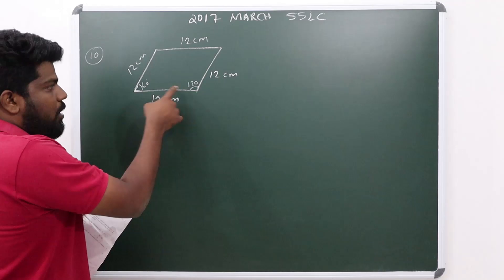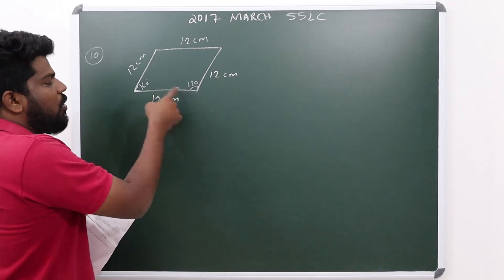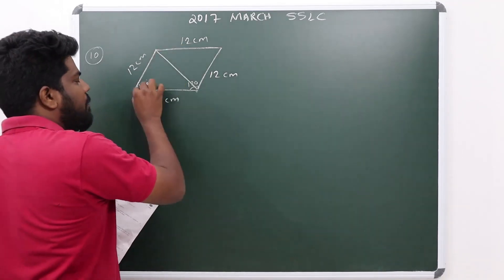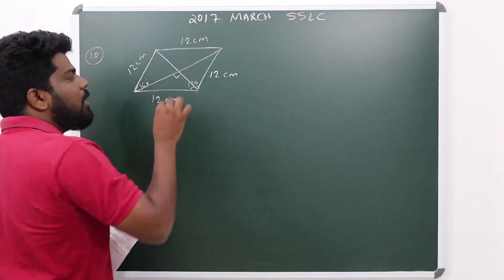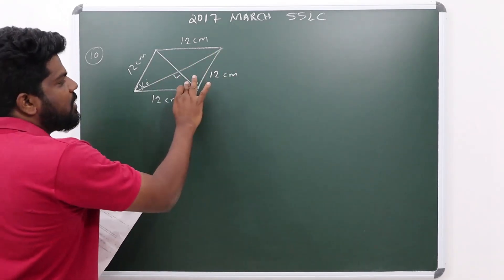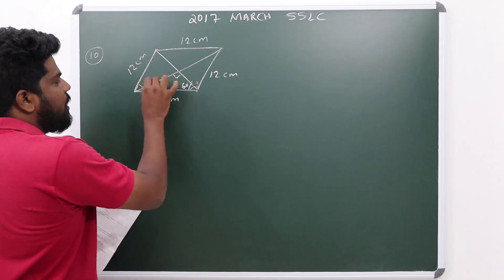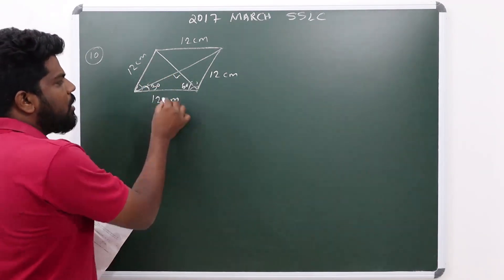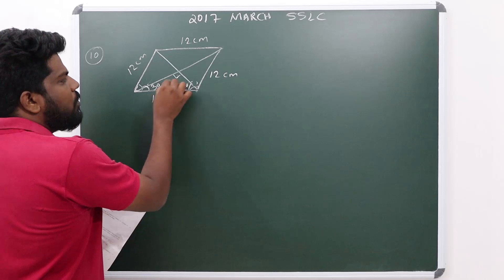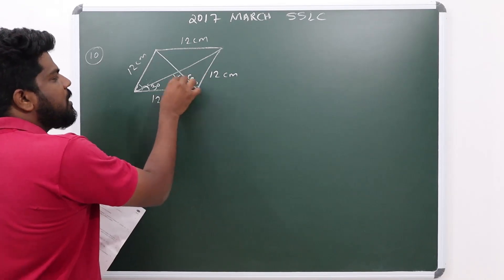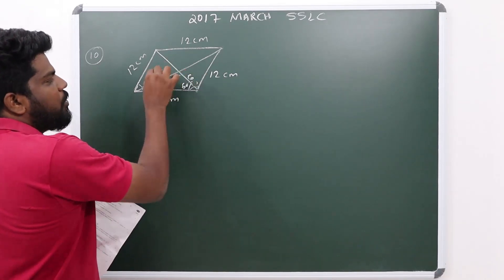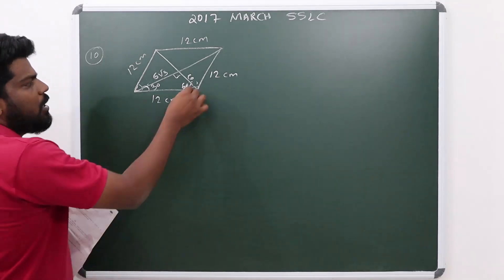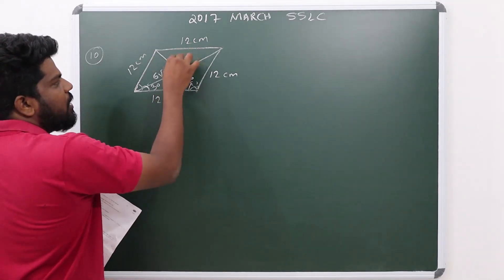From the upper side of the rhombus, if we drop a perpendicular, we get a right-angle triangle. This gives us a 60-30-90 triangle. Using the triangle ratios: the hypotenuse is 12, the side opposite 30 degrees is 6, and the side opposite 60 degrees is 6√3.